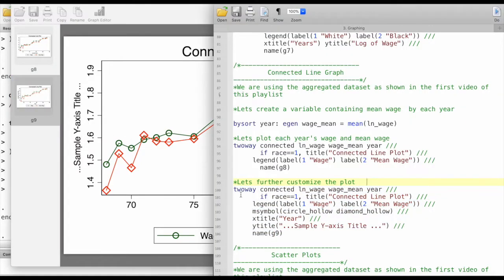What we're doing here is creating a connected line plot for these three variables for one race. We have a title which we had in the previous code, but this time we are changing the marker symbols.